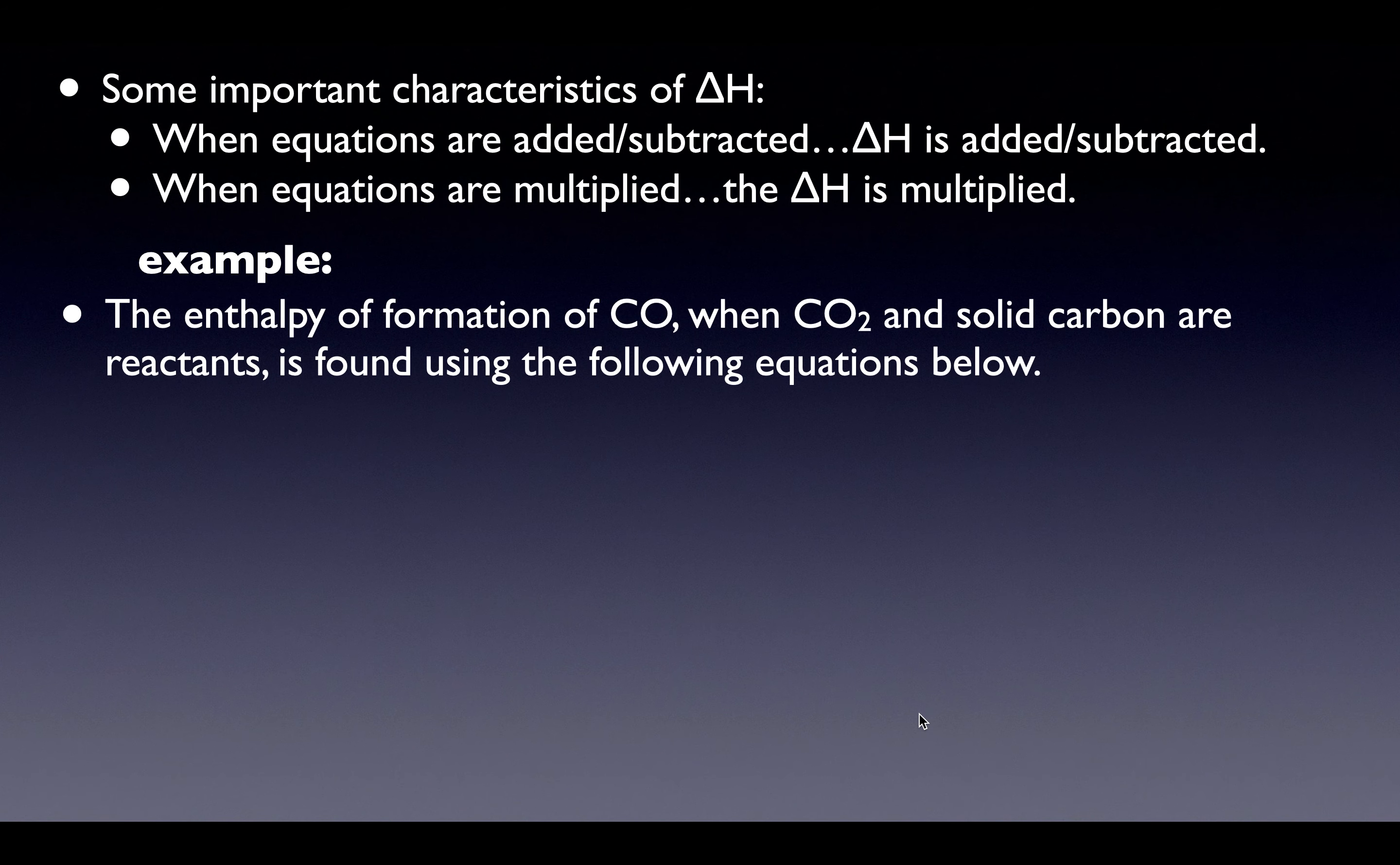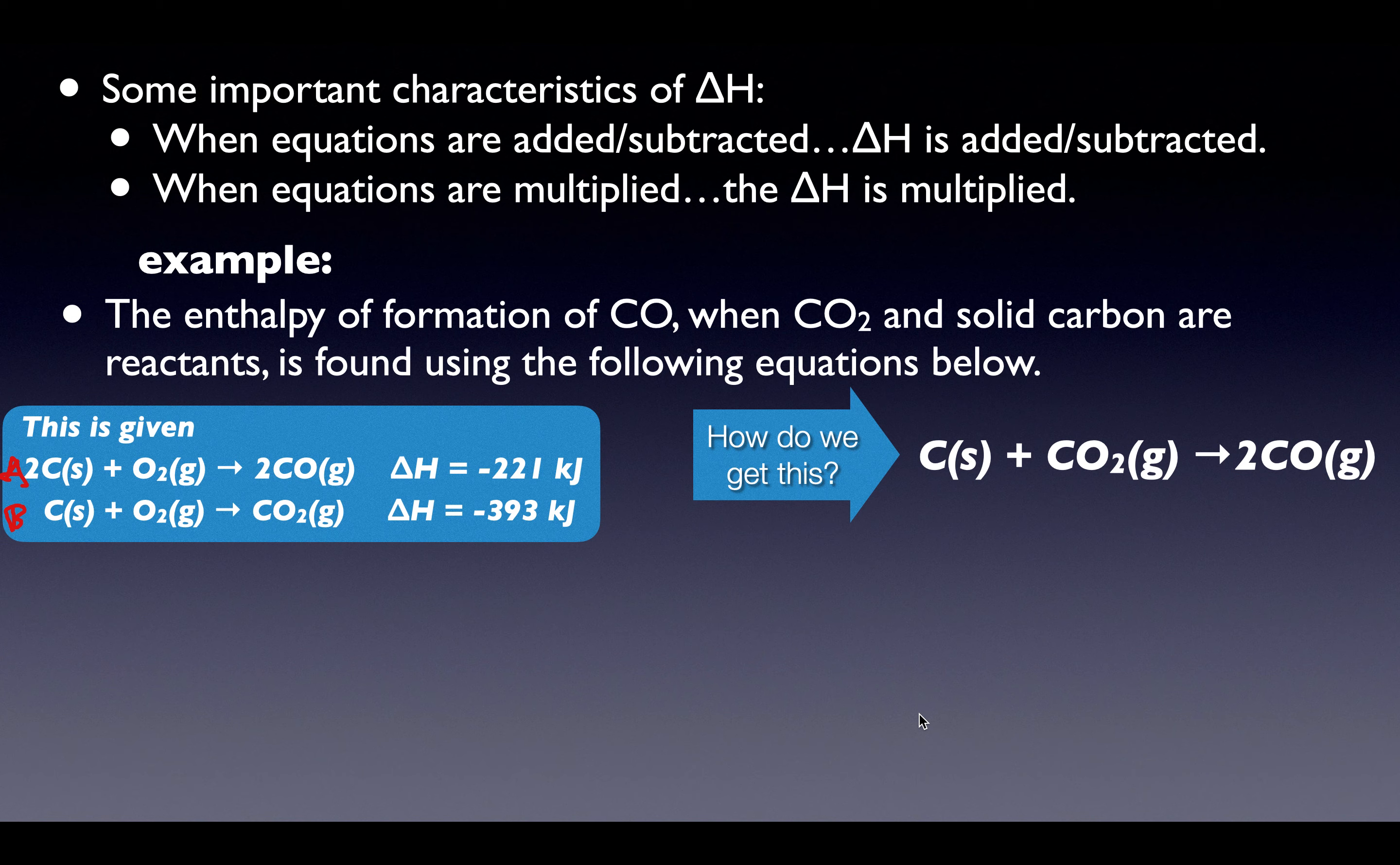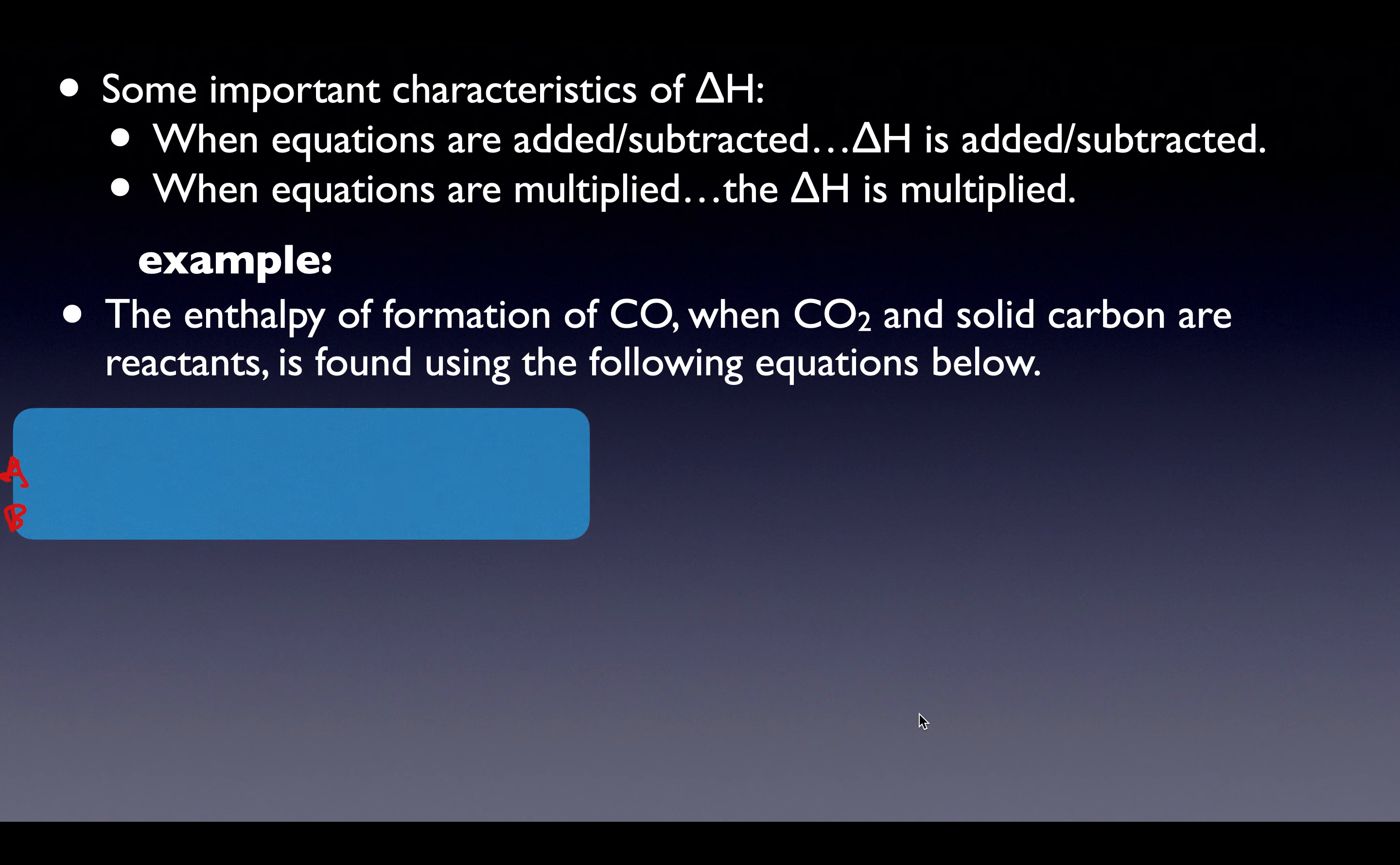The enthalpy of formation of CO when CO2 and solid carbon are reactants is found using the following equations below. Let's say this one is A and that's B. You have carbon plus oxygen produces carbon dioxide, and you have carbon plus oxygen produces carbon monoxide with two different delta H's. If I want to make carbon plus carbon dioxide goes to carbon monoxide, I'll figure out a way to do it step by step. I want carbon - I have two forms of carbon. Which one do I want? That's one here and that's two there. Let me go with B. Actually, let me go back - I need to explain the step.